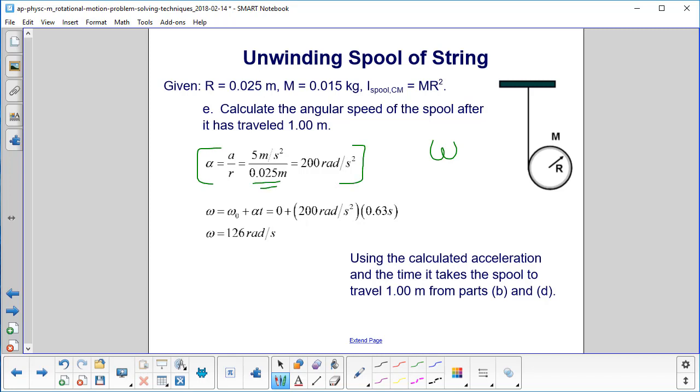So omega is omega 0 plus alpha T. It's initially at rest, so omega 0 is 0. We substitute in the numbers we found in previous parts of the problem, actually the exact slide before us. And we have the angular acceleration here. And we find omega is 126 radians per second.